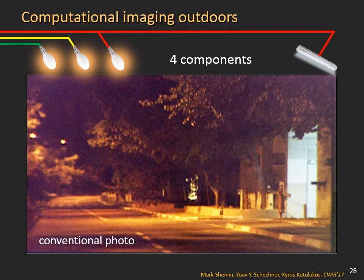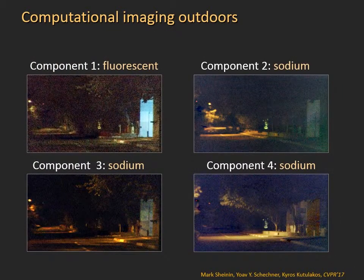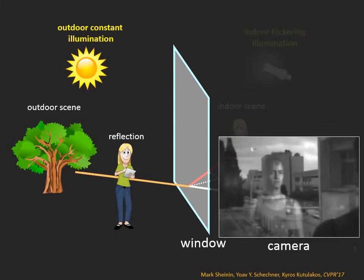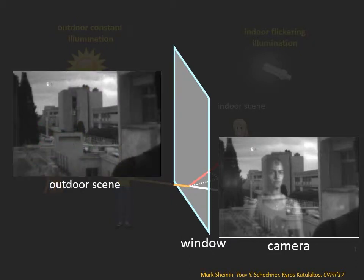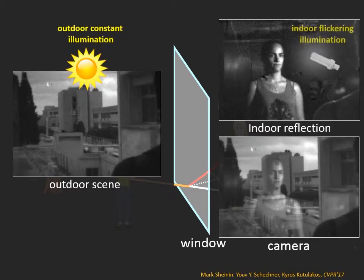Here is another example. This scene has four components, and here we reveal the scene's illumination components. Here we observe a scene through a window — the window causes a reflection. Our system separated the outdoor scene from the indoor reflection. The key for doing this is that outdoors sunlight does not flicker, but indoor lighting is affected by flicker.